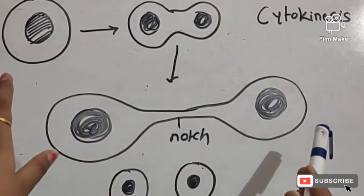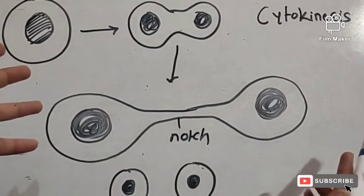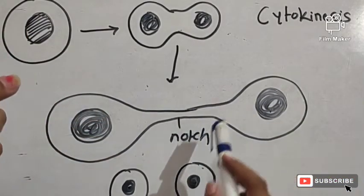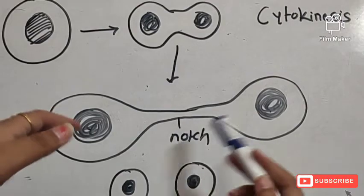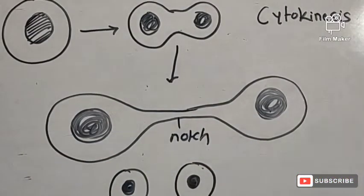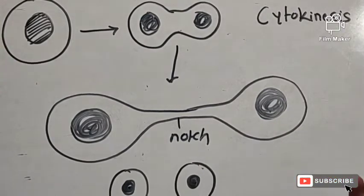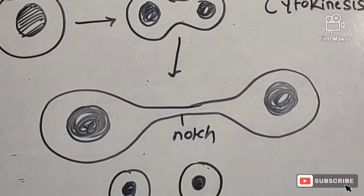In cytokinesis, a notch-like appearance forms in the cell membrane, which becomes more prominent and eventually the two parts detach from each other, forming two different daughter cells. In plant cells, a cell plate structure is formed instead. This covers everything about mitosis.